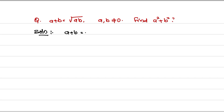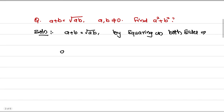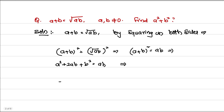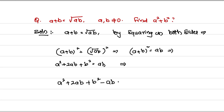Solution: a + b = √(ab). By squaring on both sides, it implies (a + b)² = ab. Expanding: a² + 2ab + b² = ab. Therefore, a² + 2ab + b² − ab = 0.